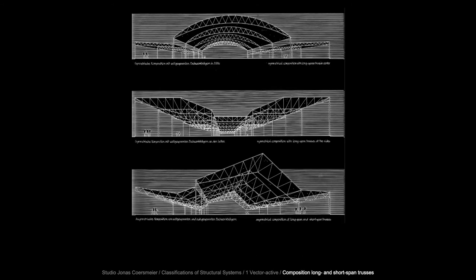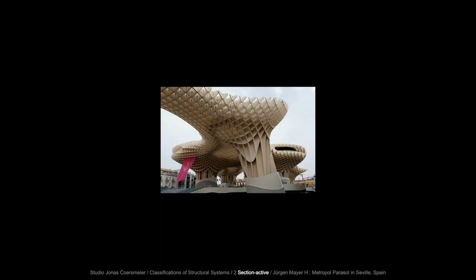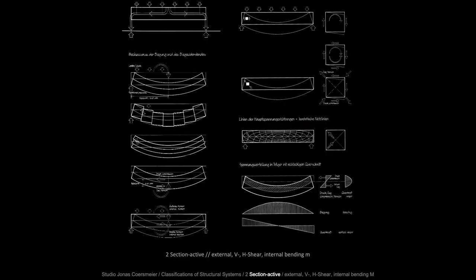Here we see an application of vector active systems, specifically a composition of long and short span trusses. We move to the section active systems — these are solid rigid linear elements, including slabs, in which the redirection of forces is affected through the mobilization of sectional forces. The system members are primarily subject to bending, that is to a combination of inner compression, tension, and shear. Sectional profile is a typical feature here. External forces are redirected through the material section. Here we see the mechanisms of bending: the external rotational moment, the vertical shear, the horizontal shear, internal rotational moment, and the bending resistance, with the respective stress diagram and moment diagram.